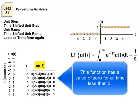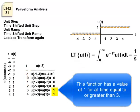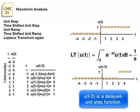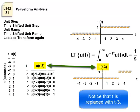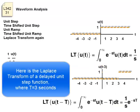This function has a value of zero for all time less than three. This function has a value of one for all time equal to or greater than three. U of t minus three is a delayed unit step function. Notice that t is replaced with t minus three. Here's the Laplace transform of a delayed unit step function, where the delay is three seconds.